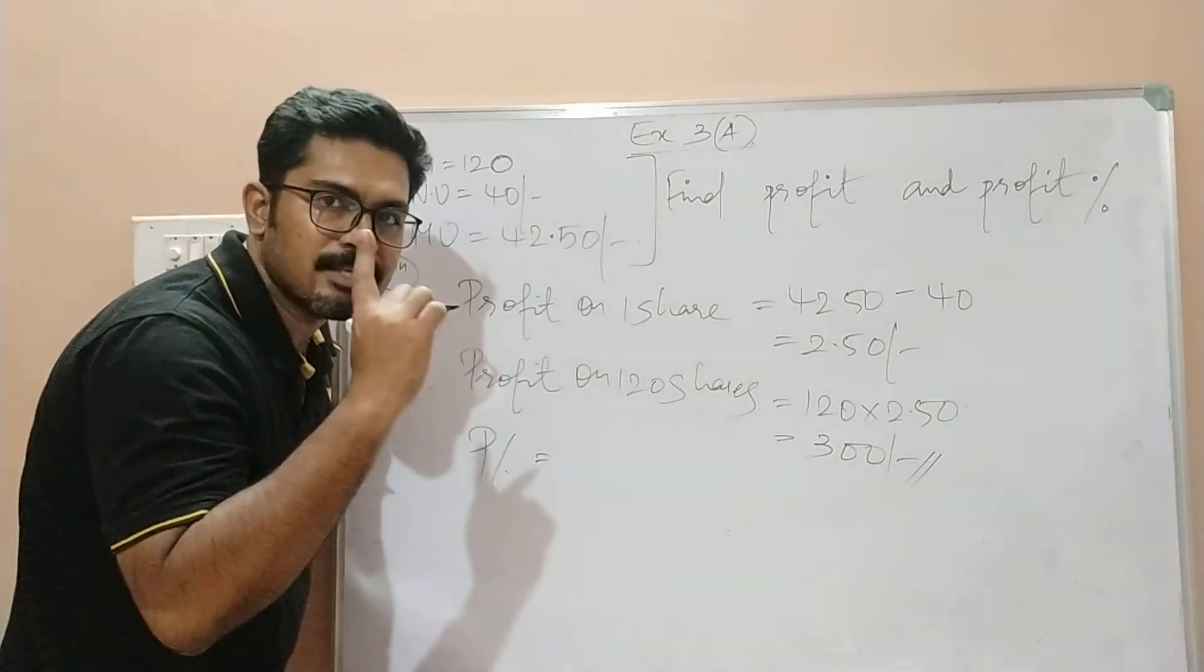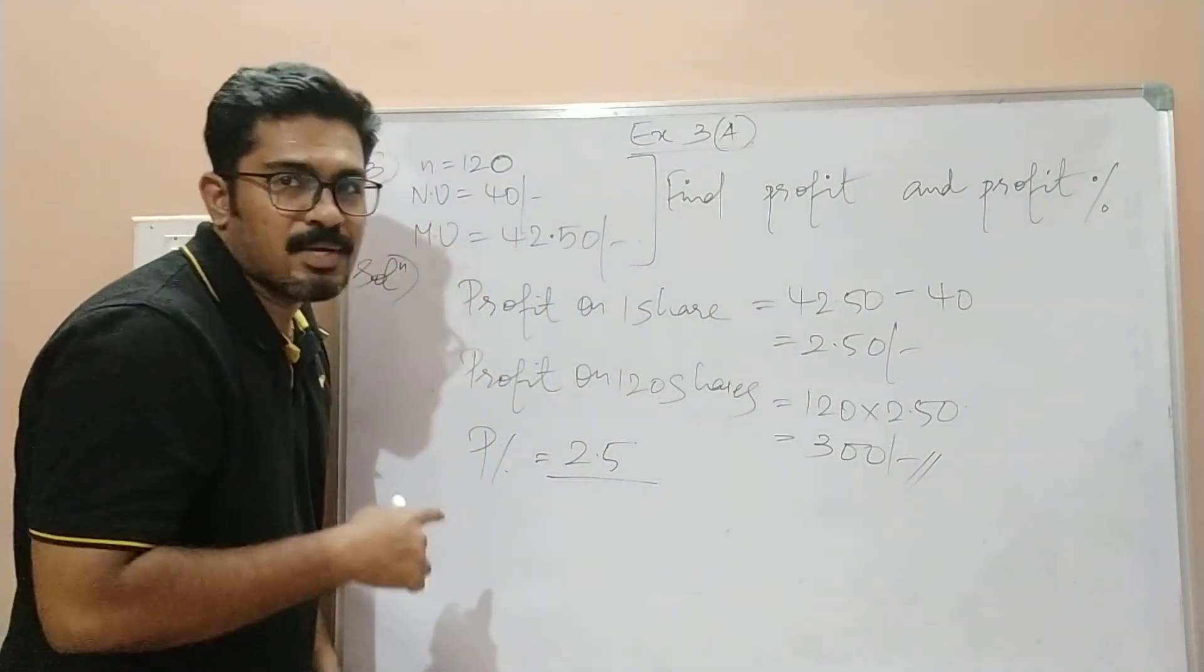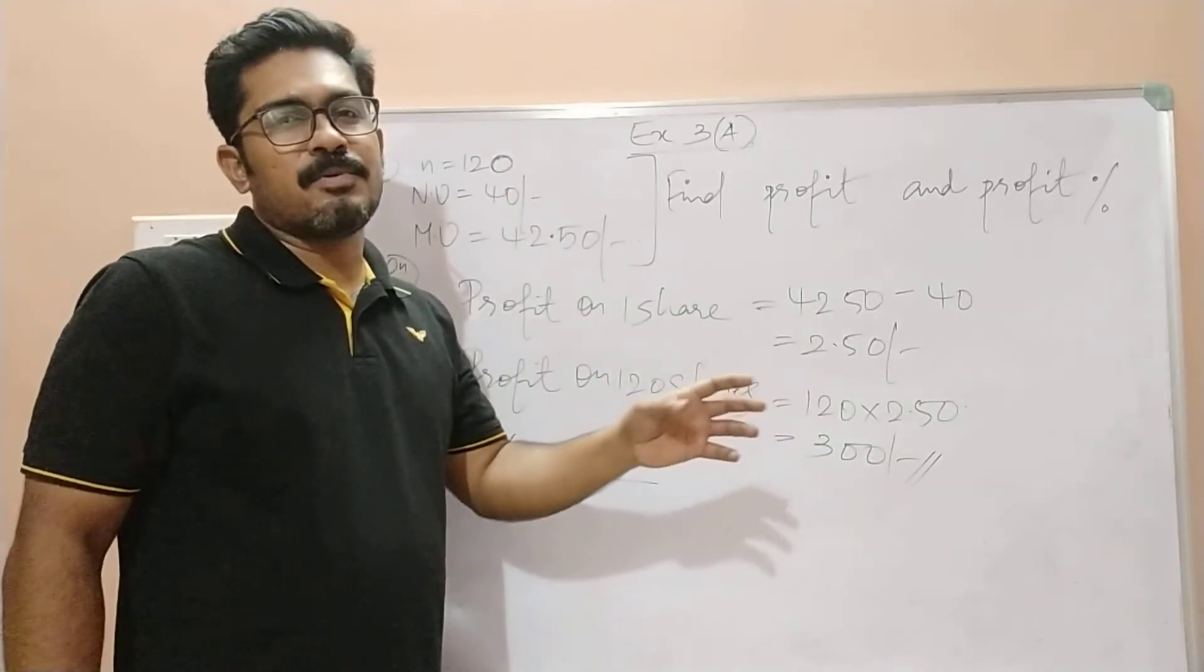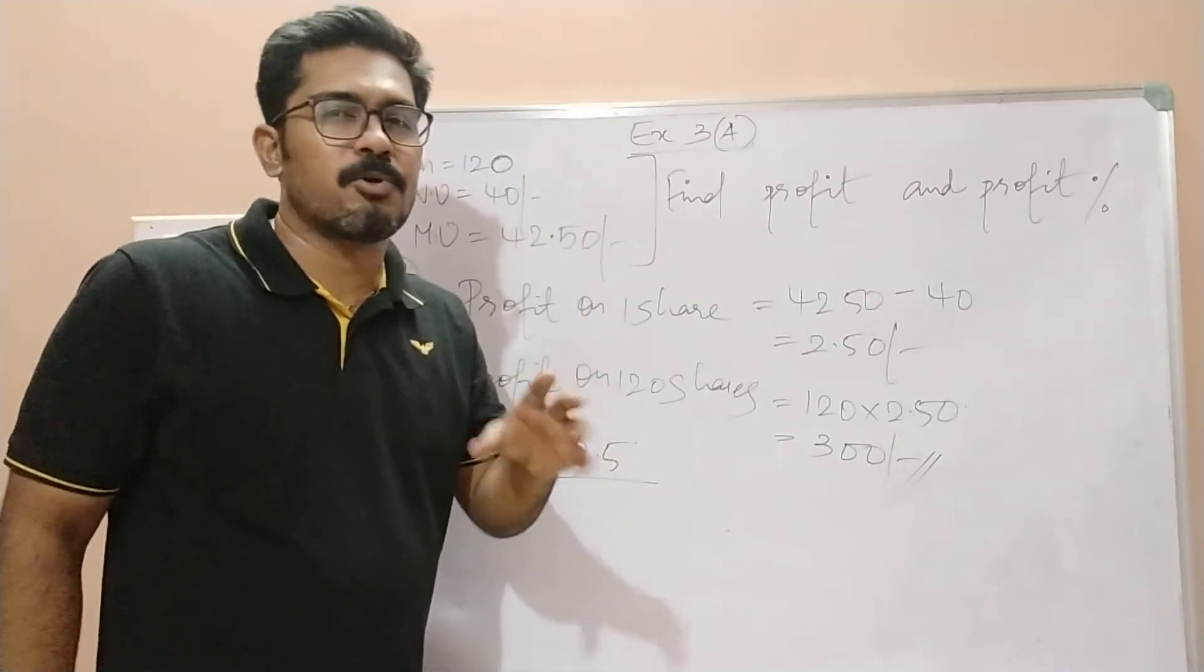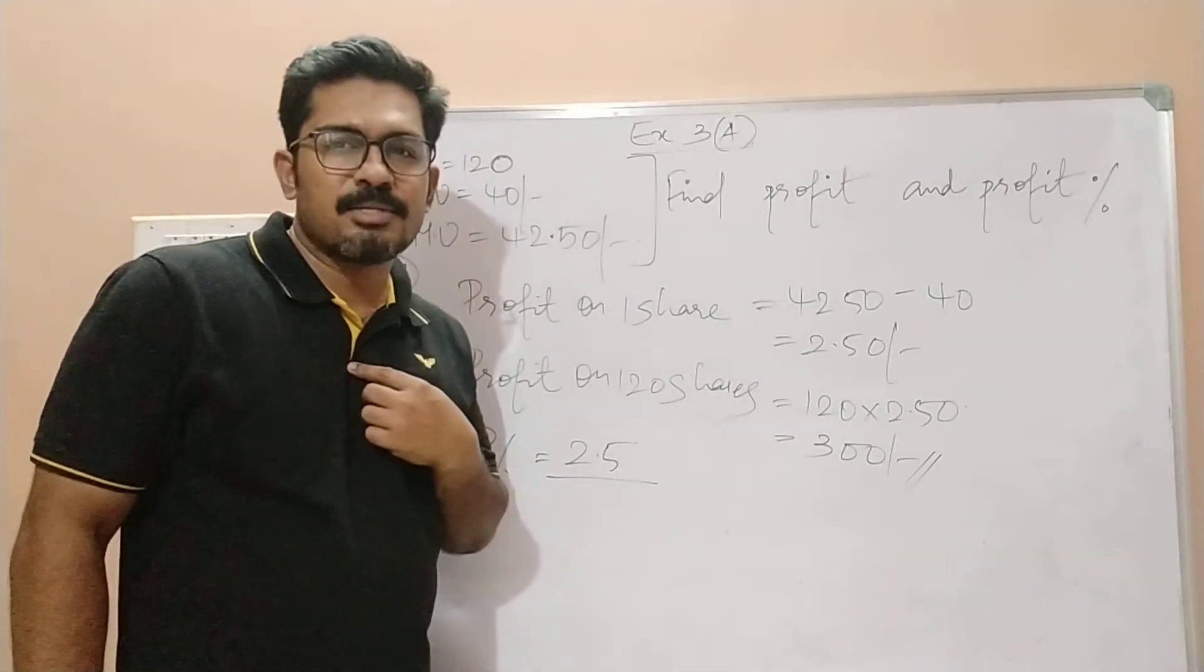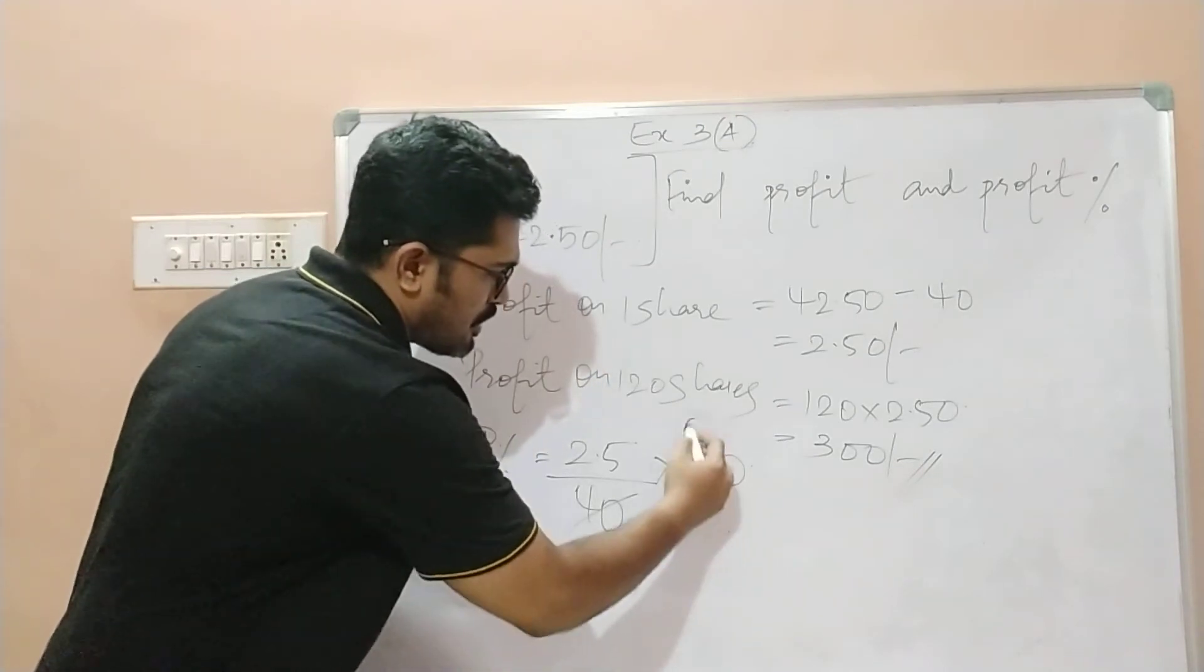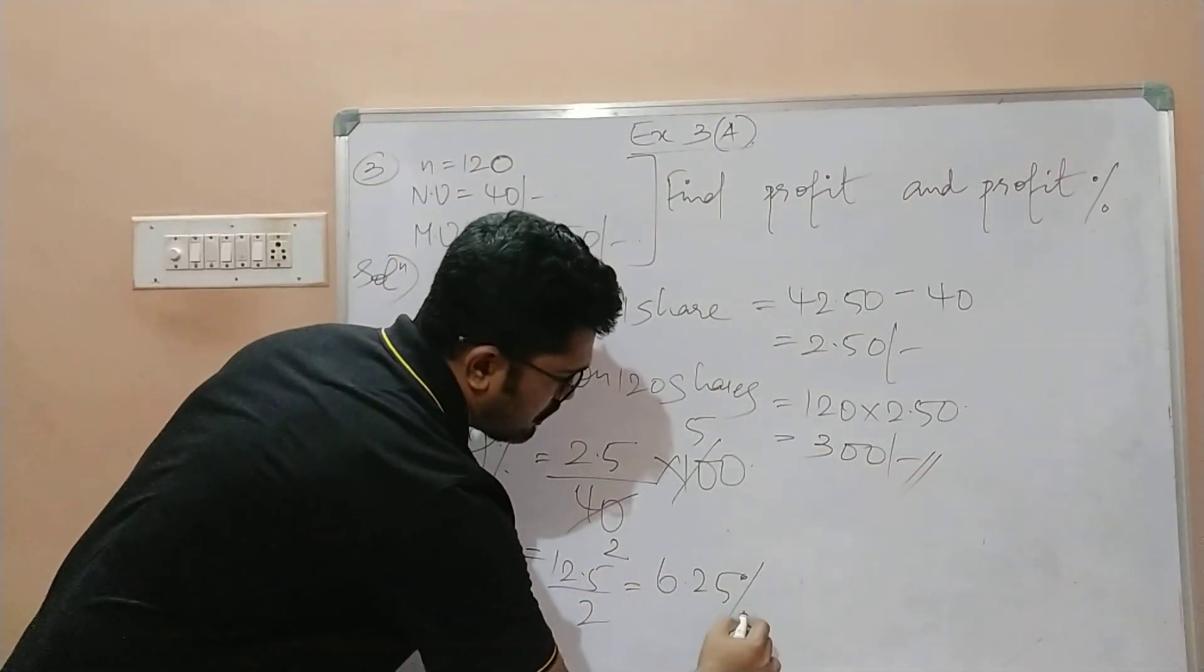So children, here the profit percentage will be equal to the profit that you made by selling one share, that is equal to 2 rupees 50 paise, divided by the cost price. Here in this chapter since you are learning shares and dividends, each and every term like the buying price and the selling price all are having different terms. We cannot make use of the word cost price, selling price - discount is there but not the typical terms that we use in the chapter profit and loss. So children, instead of using the word cost price I will use the word nominal value because I have bought these shares at nominal value. So the nominal value is 40 rupees. You just multiply it with 100, you will get the profit percentage. 2s are 4, 25s are 100, so it will be 12.5 divided by 2 which is equal to 6.25 percentage.